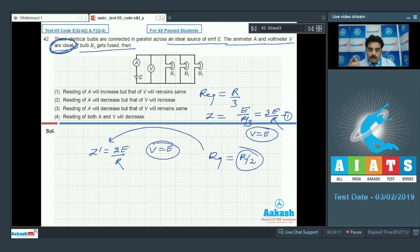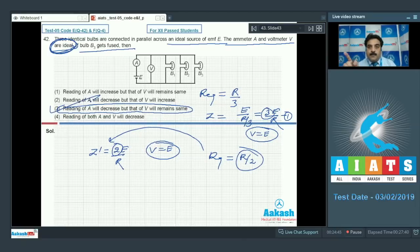By this calculation, the current changes from 3E/R to 2E/R. When bulb B3 gets fused, the ammeter reading will decrease but the voltmeter reading remains the same. Option 3 is correct: reading of A will decrease but that of B will remain the same.